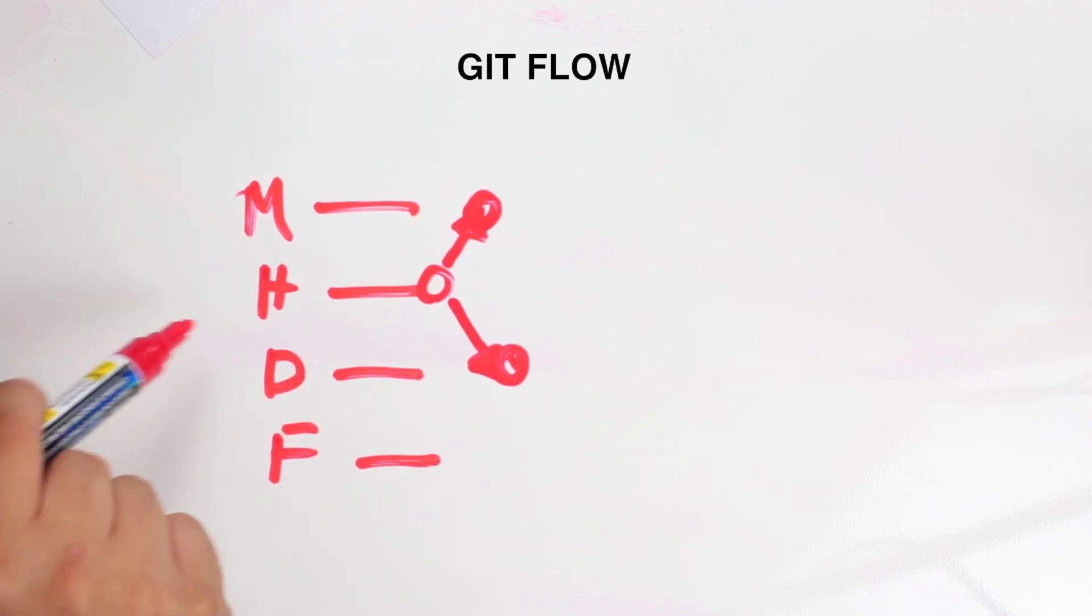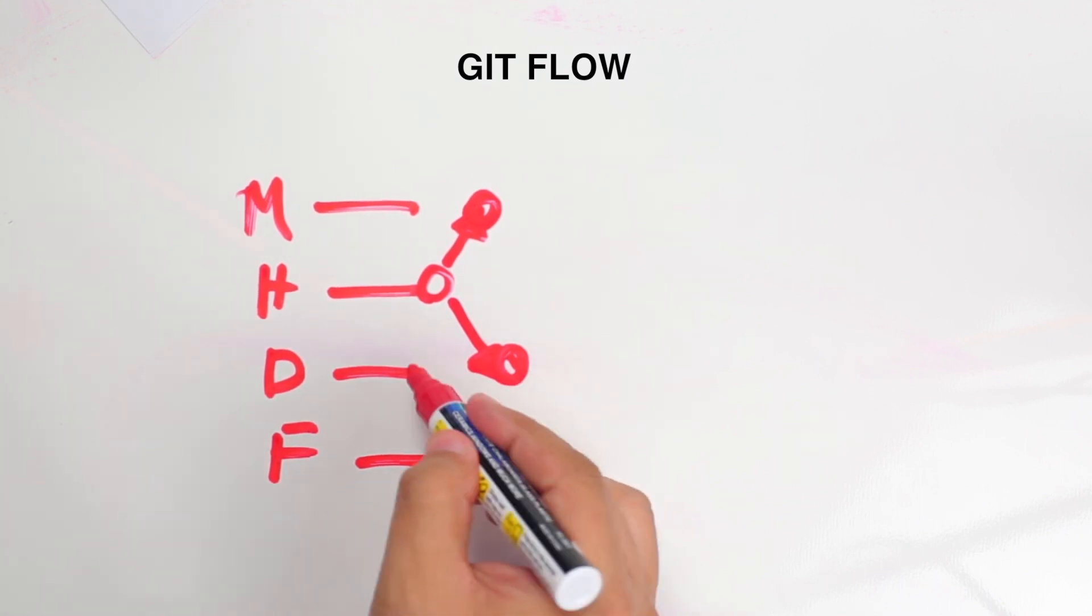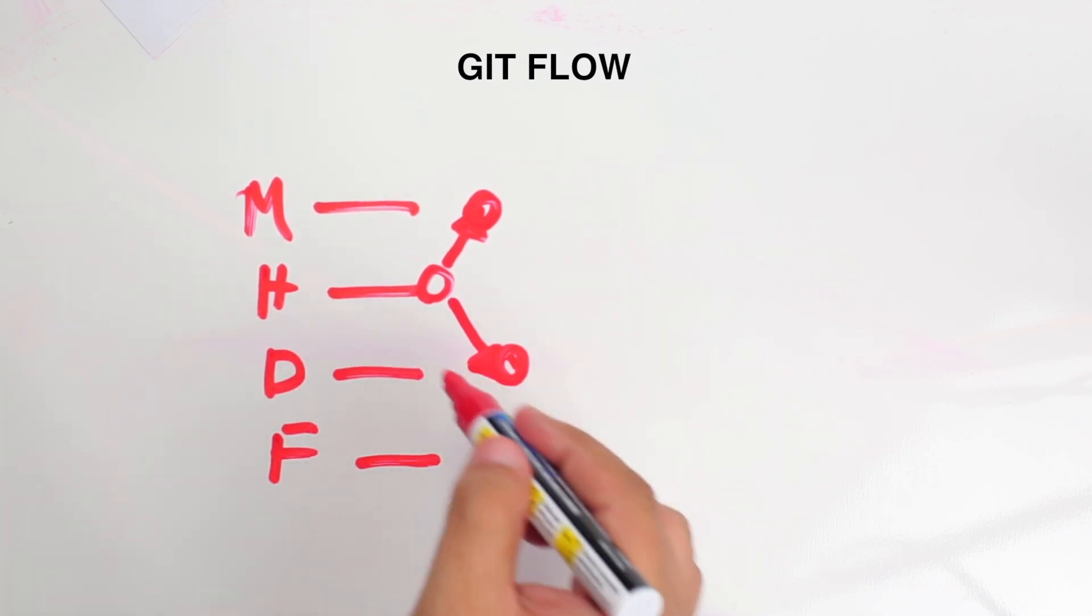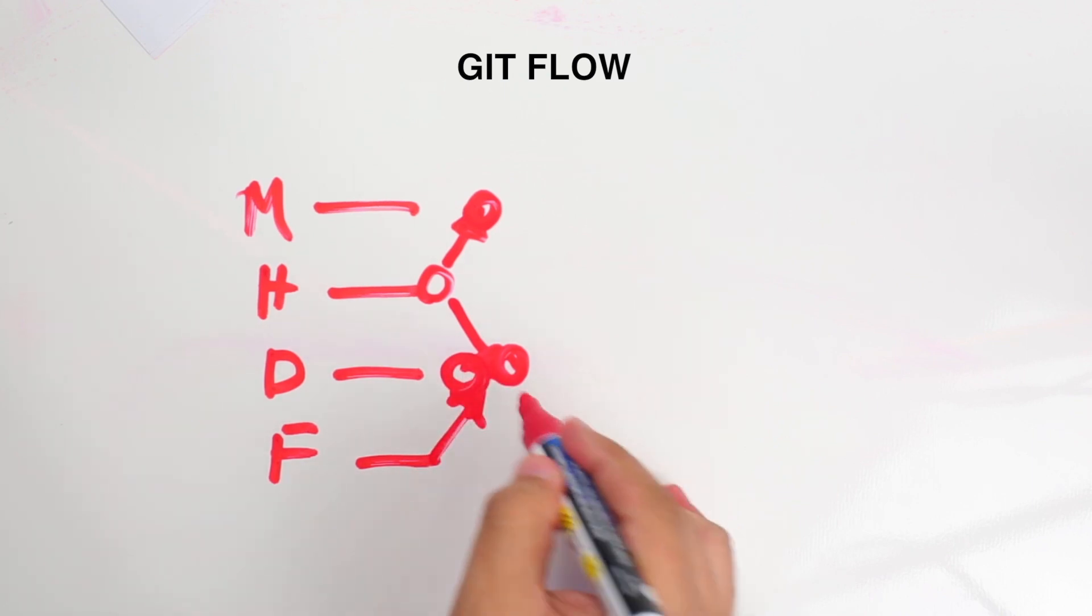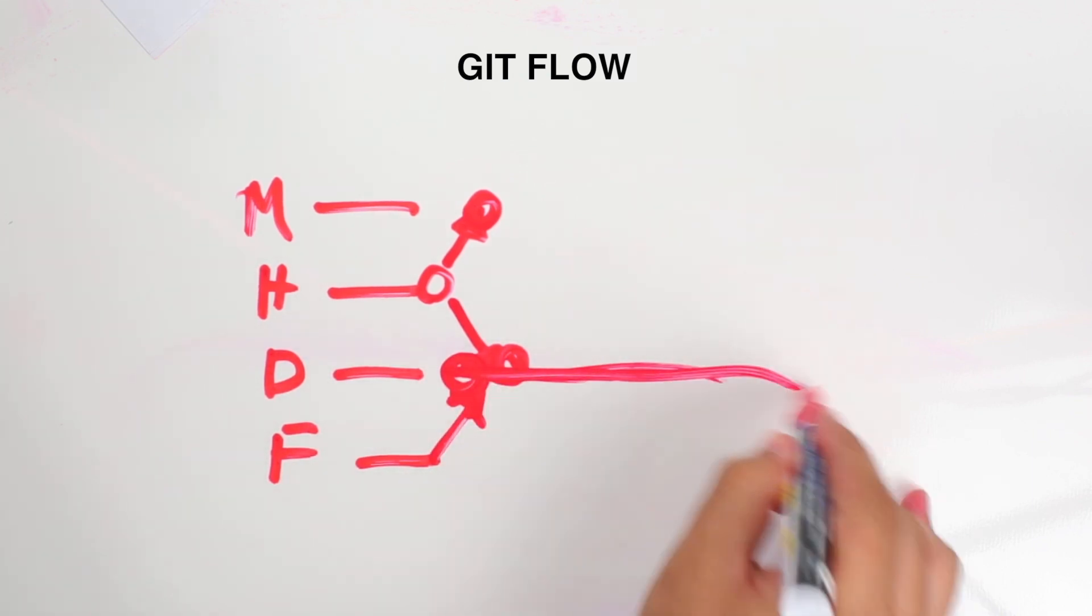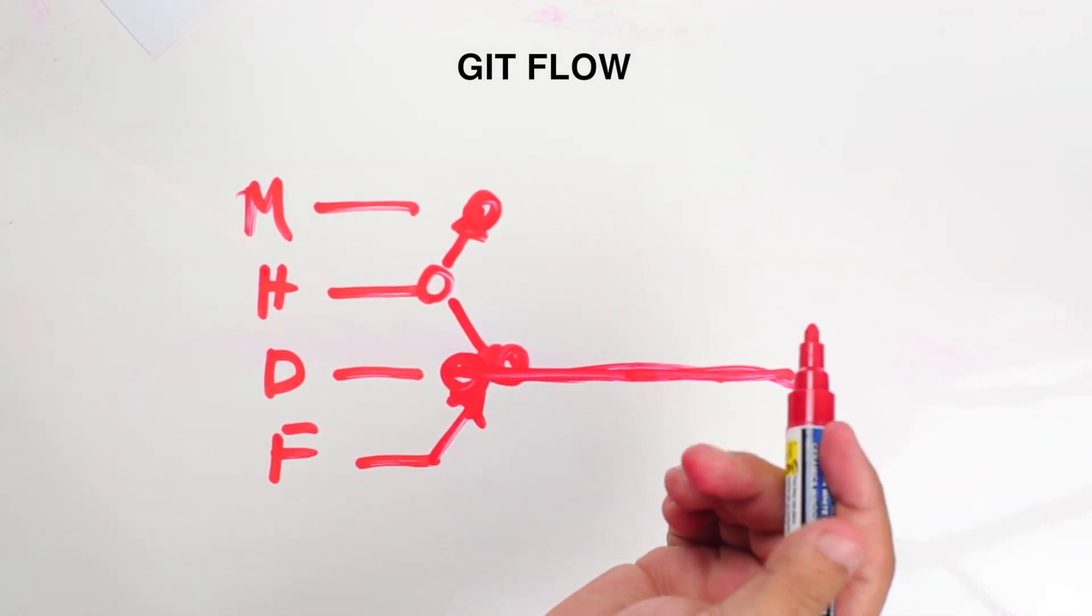The developer branch essentially integrates from the hotfix branch and the feature branch. In the case of working on a feature, we integrate or merge into the developer branch, and it looks something like this. Eventually this is going to look like a subway map, but it's pretty easy to understand.